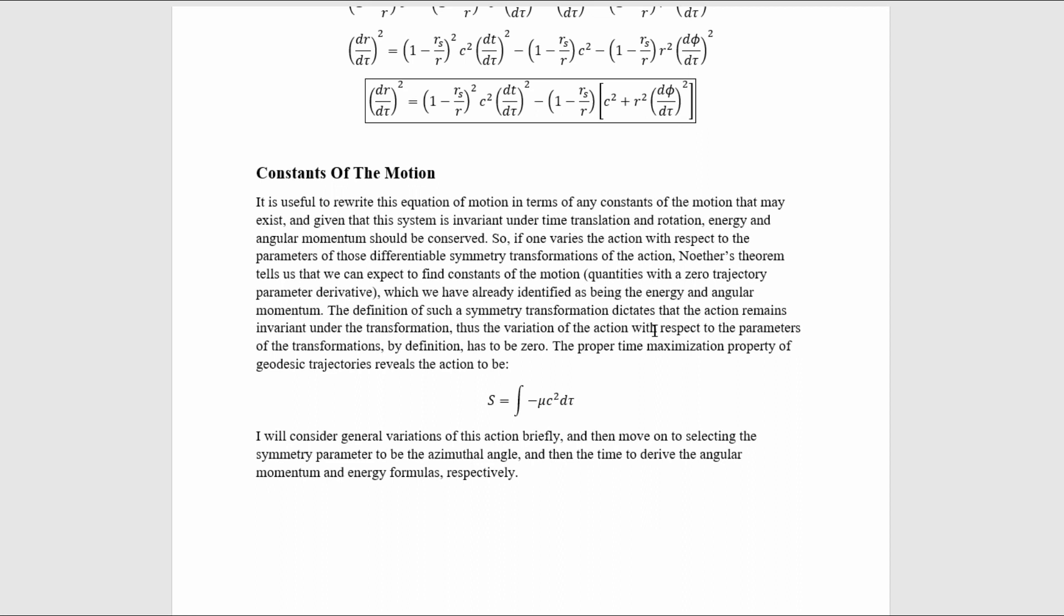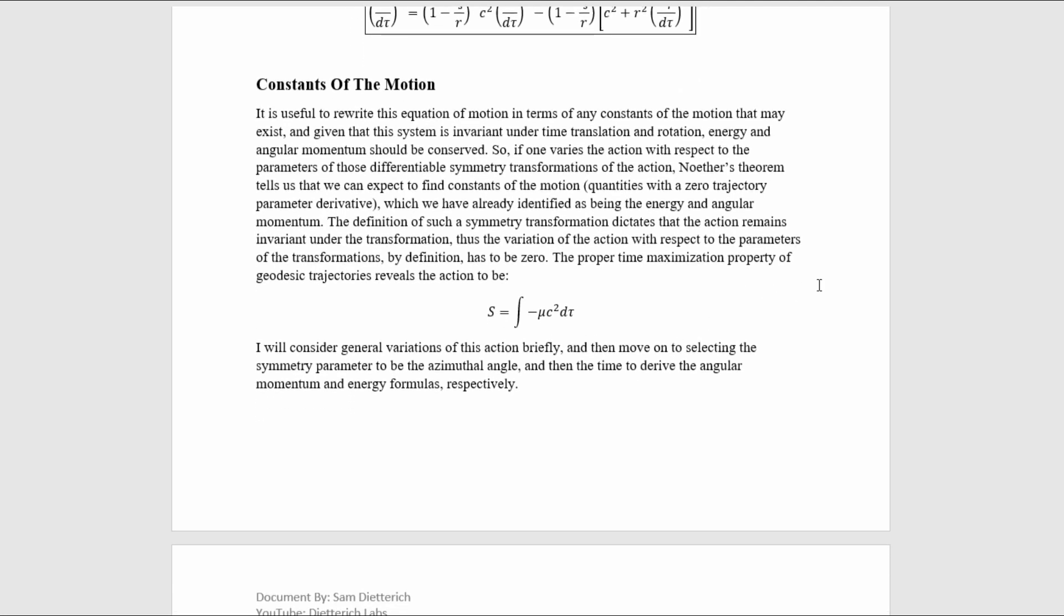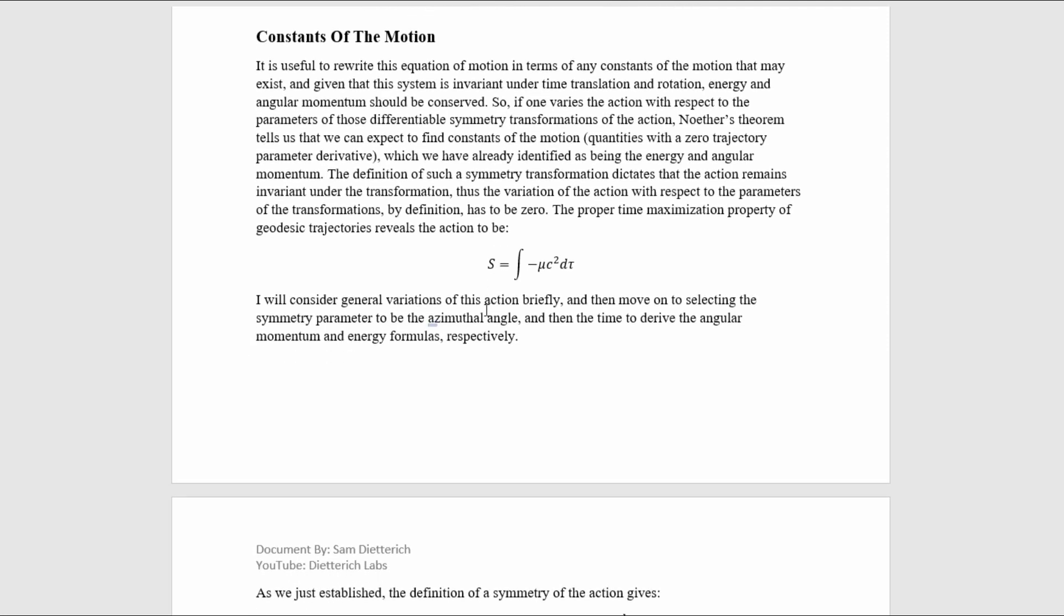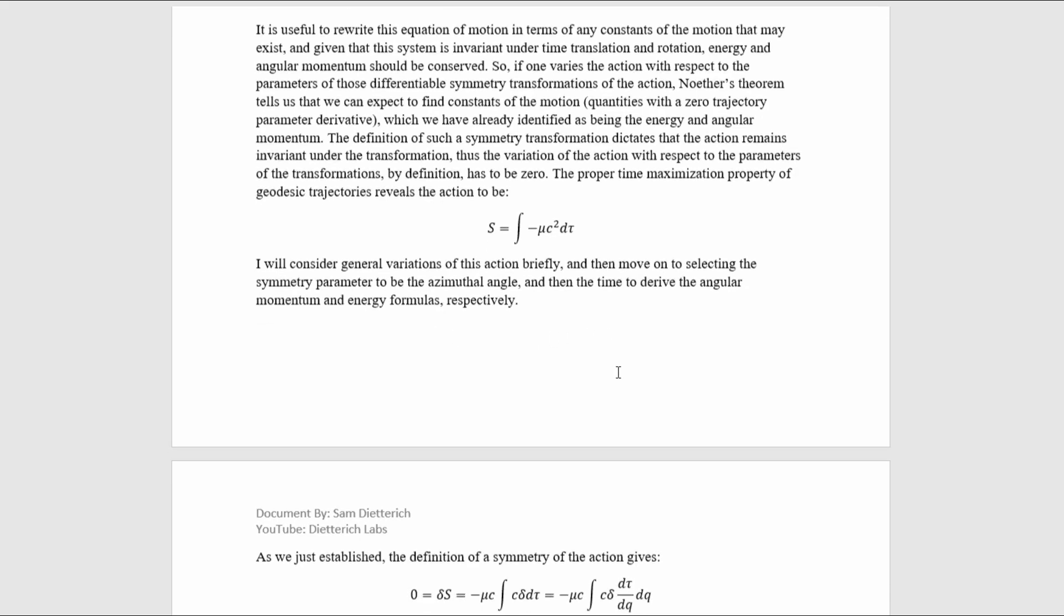The definition of such a symmetry transformation dictates that the action remains invariant under the transformation. Thus, the variation of the action with respect to the parameter of the transformations, by definition, has to be zero. The proper time maximization property of geodesic trajectories reveals the action to be this. I will consider general variation of this action briefly, and then move on to selecting the symmetry parameters to be the azimuthal angle, and then the time to derive the angular momentum and energy formulas respectively.